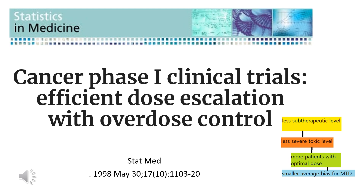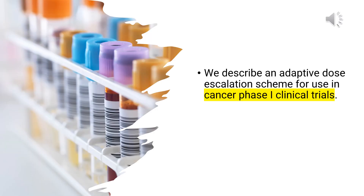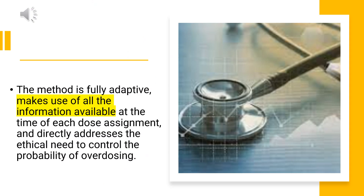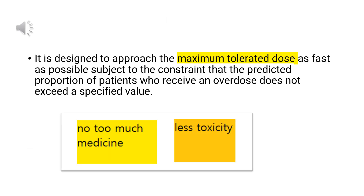Cancer Phase 1 Clinical Trials: Efficient Dose Escalation with Overdose Control. We describe an adaptive dose escalation scheme for use in Cancer Phase 1 clinical trials. The method is fully adaptive, makes use of all the information available at the time of each dose assignment, and directly addresses the ethical need to control the probability of overdosing. It is designed to approach the maximum tolerated dose as fast as possible, subject to the constraint that the predicted proportion of patients who receive an overdose does not exceed a specified value.